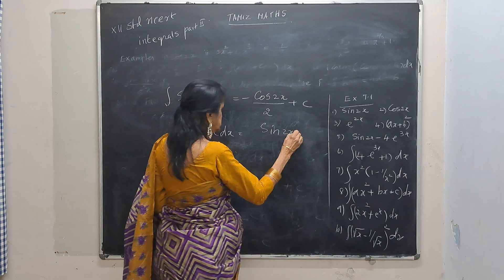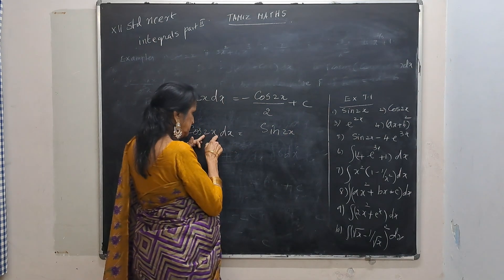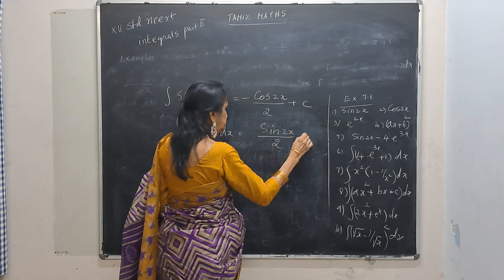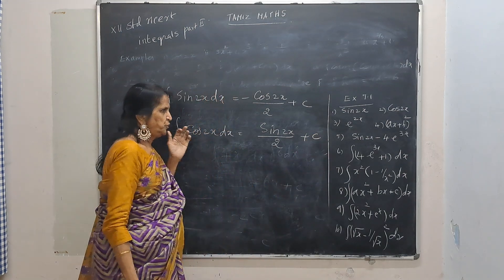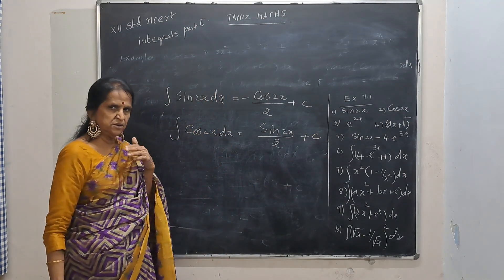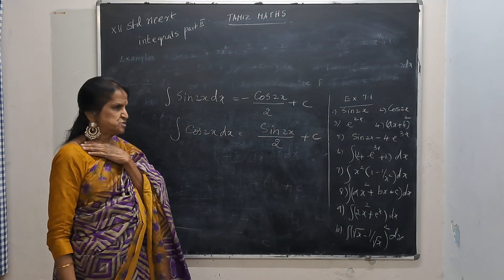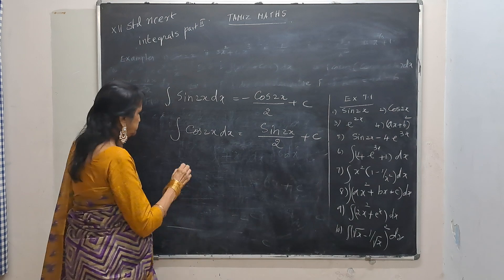Cos — so that will be sin 2x. With 2x here, when I differentiate, the chain rule factor of 2 will be there. So sin 2x divided by 2 plus c. These are the same type of questions — you can also do by simple substitution, which we can learn afterwards.